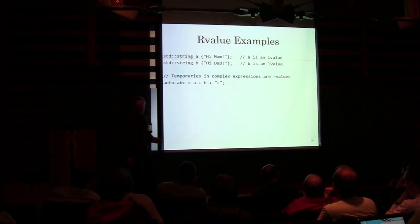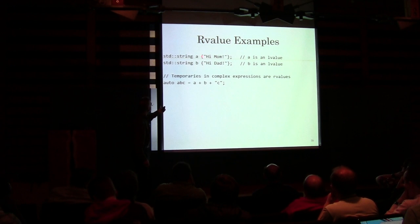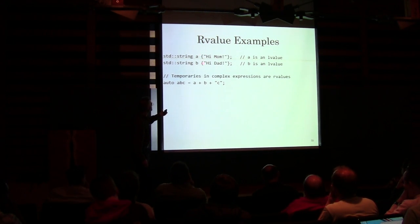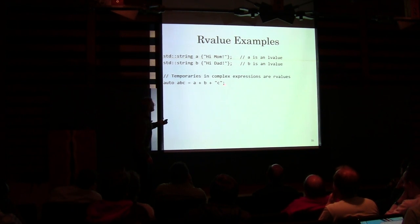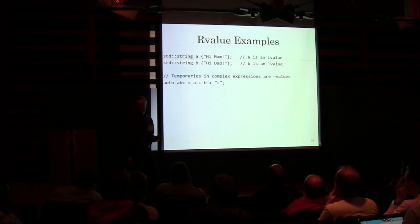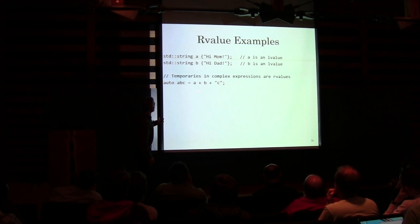Let's look at some stuff that's R-values. Up here, these are L-values — because I've got a string named A and a string named B, I can go beat those up. But if I do an expression like A + B + C, there are a bunch of temporaries being constructed there. You don't get to see them, but the compiler is building them for you. And eventually, as a result of the intermediate temporaries, something gets popped into ABC — that's an L-value.